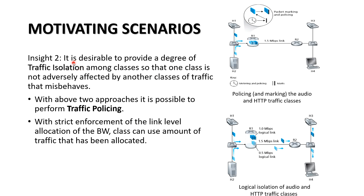Insight 2: it is desirable to provide a degree of traffic isolation among classes so that one class is not adversely affected by another. In the previous example, if the 1 Mbps link is used for audio sending at 1 Mbps, then 0.5 Mbps remains vacant and can be used by HTTPS. This is called traffic isolation among classes.